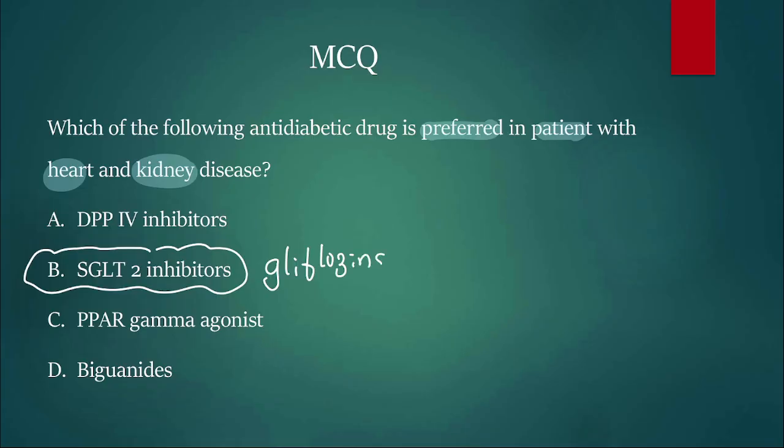Your answer is SGLT2 inhibitors - that means you're right. SGLT2 inhibitors end with 'gliflozins', for example canagliflozin, empagliflozin, dapagliflozin. DPP-4 inhibitors end with 'gliptin' - sitagliptin, linagliptin, vildagliptin. PPAR gamma agonist is pioglitazone, and biguanides are metformin.